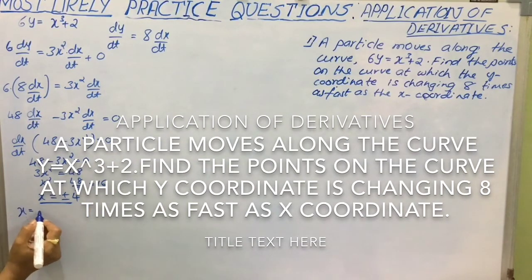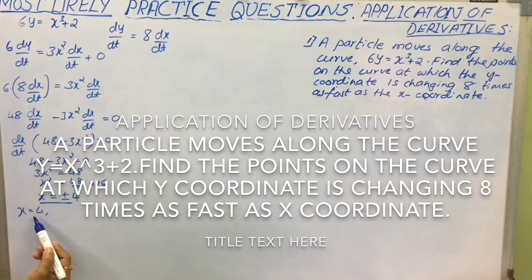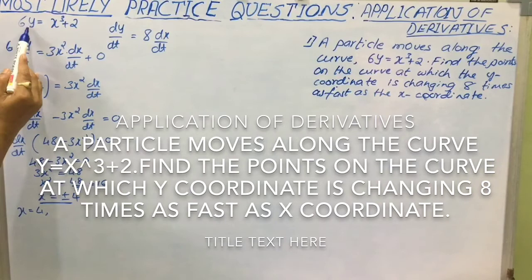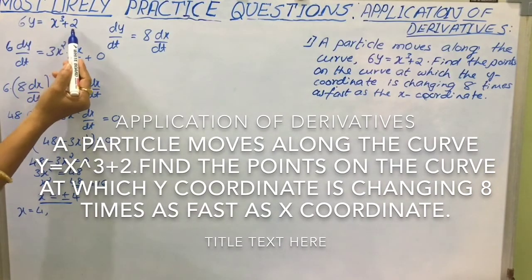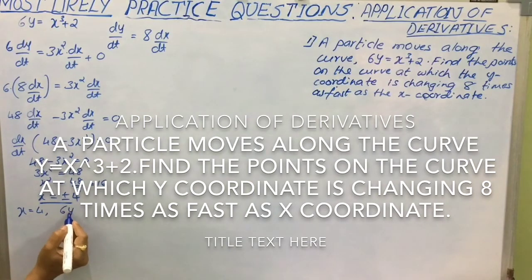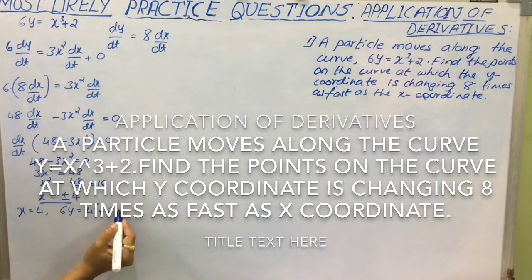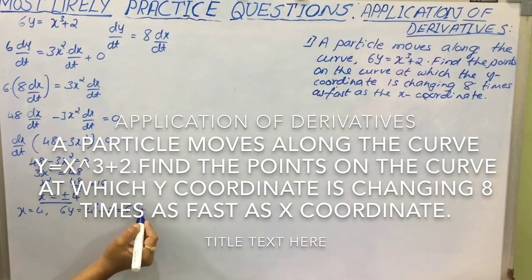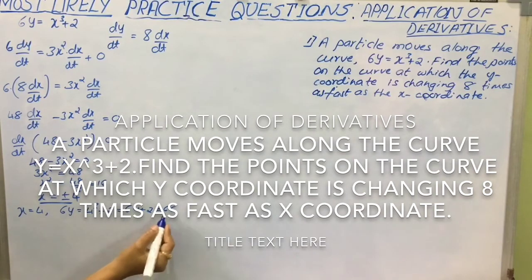Now let us consider x is equal to 4. To get the y value substitute x equal to 4 in the given curve. That is 6y equal to x cube plus 2. So 6y equal to 4 cube plus 2 that is 64 plus 2 that is 66. So 6y is 66.